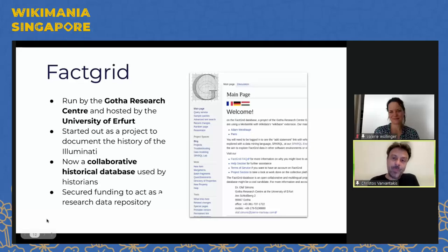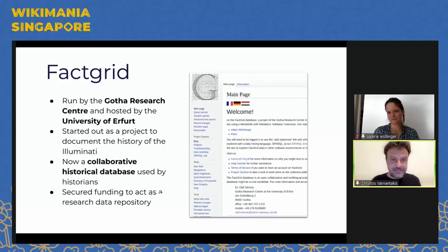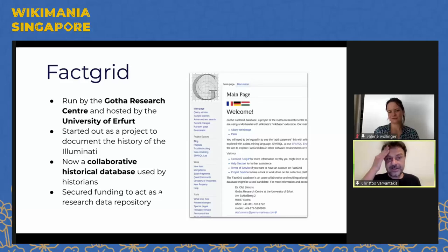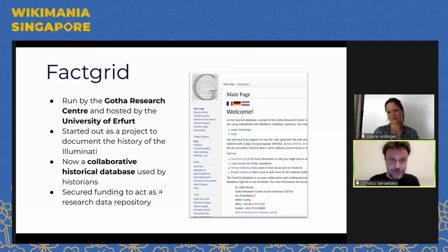Another example is The Factory — a Wikibase instance that started as a research project of a group of historians, with the specific purpose of documenting the history of the Illuminati. But by exploring its functionality, the original makers decided it could be much more. What it has become today is an open database for historians and researchers, where they can not only deposit their data but also work live, collaboratively, analyzing, comparing, and connecting data.